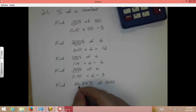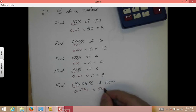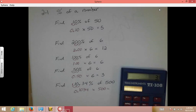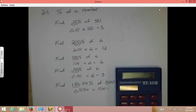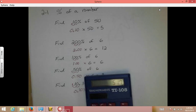To the left, to the left, we end up with 0.1034 times 500. And in our calculators, 0.1034 times 500, we end up with 51.7.